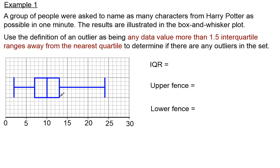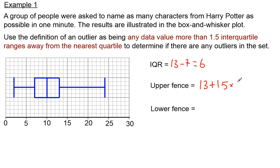The interquartile range is the difference between our upper quartile and lower quartile. Our upper quartile is 13 and our lower quartile is 7, so our IQR is 13 minus 7, which is 6. Now for our upper fence: that's our upper quartile plus 1.5 times our IQR, so 13 plus 1.5 times 6. Our upper fence equals 13 plus 9, which is 22.